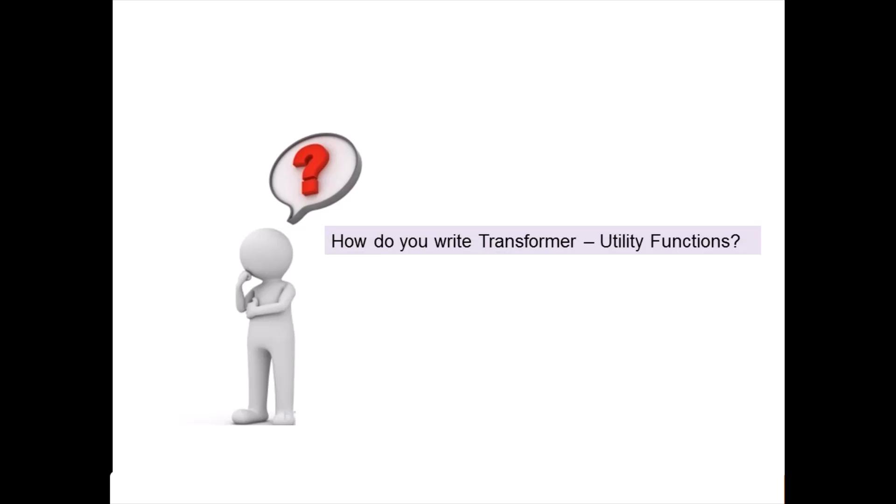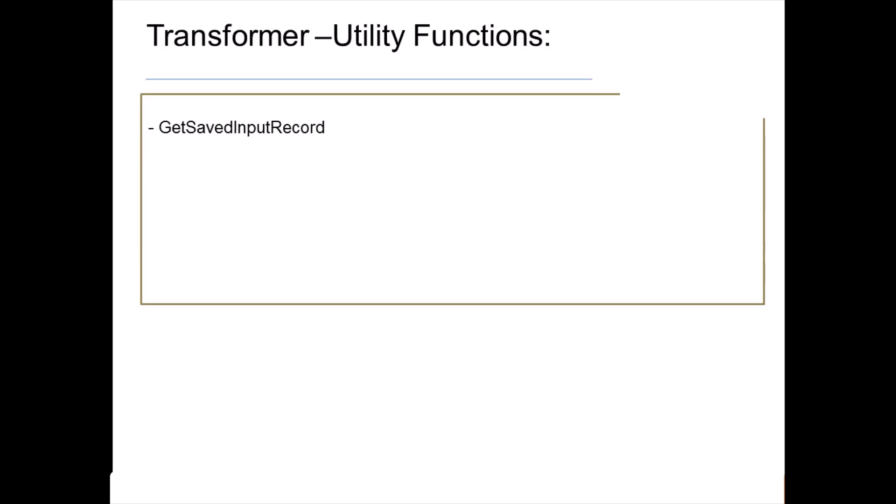There is another category used for transformer looping: transformer utility functions. GetSavedInputRecord is a new function introduced when looping was introduced. Whatever input records are read get saved to the transformer cache memory. GetSavedInputRecord gives you a count of input records that have been saved. Next, SurrogateKey gives you the value of the next surrogate key. Most of these functions are applicable for transformer looping — when we implement a looping example, we'll be able to understand all these functions better.